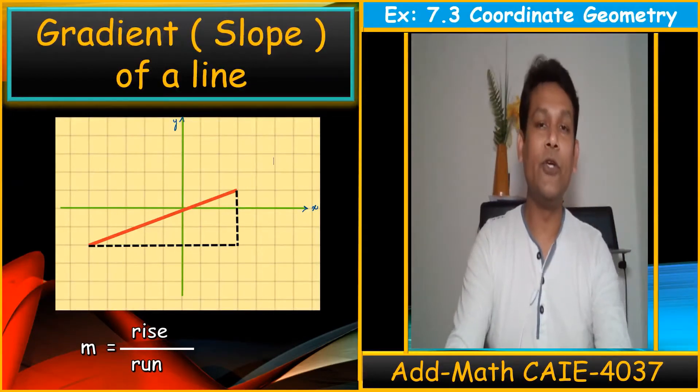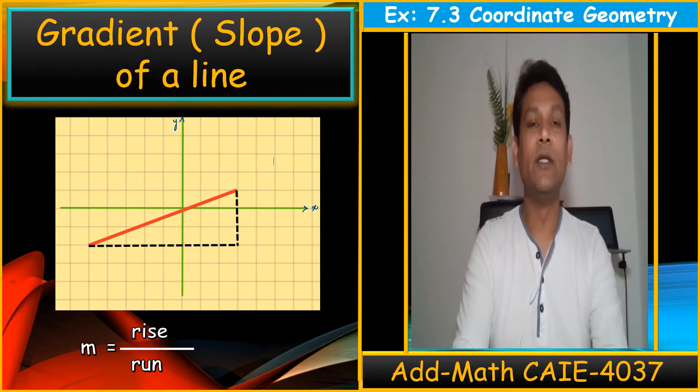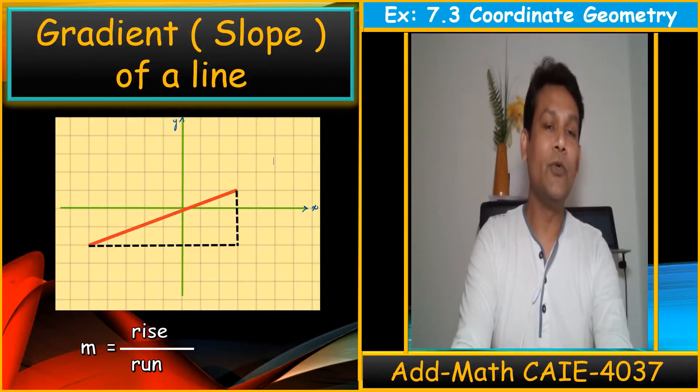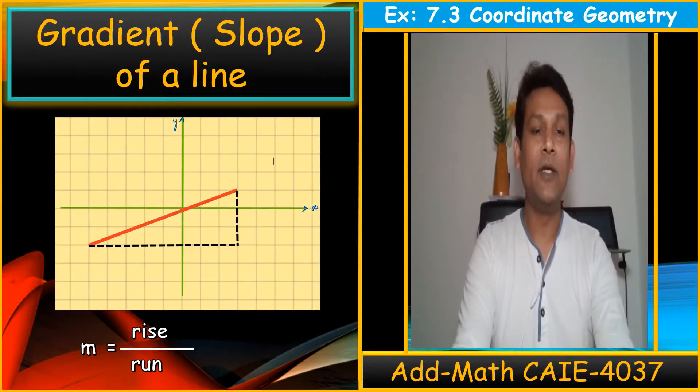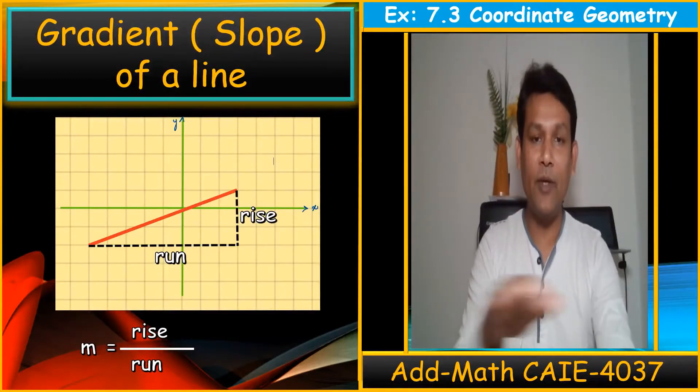Gradient is also equals to tan theta. I will discuss later when we start with trigonometry and differentiation. I will discuss about the tangent is also equals to gradient. Gradient is also equals to rise upon run. In this diagram, you can see the rise is this part and run is also given, the horizontal part.